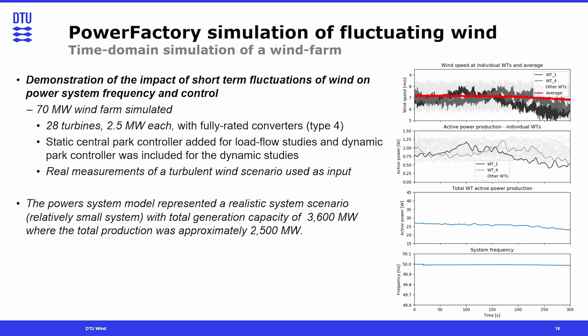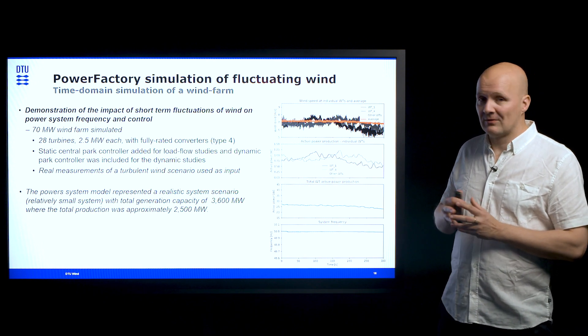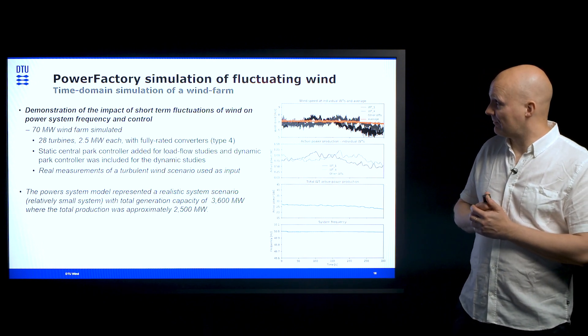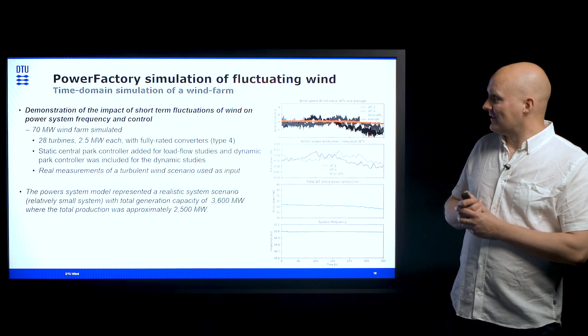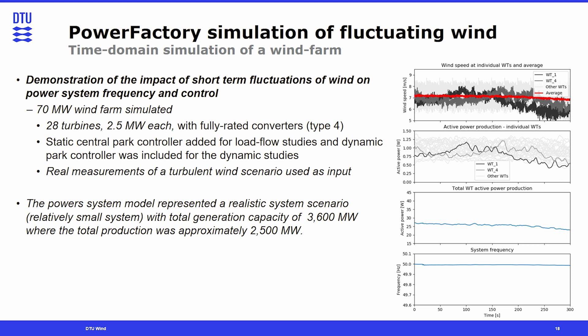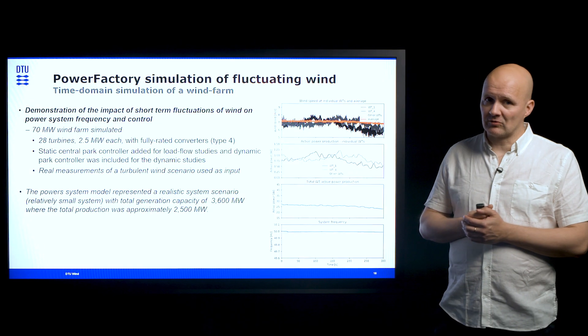We can validate these observations by looking at a Power Factory simulation carried out to demonstrate the impact of short-term wind fluctuations on power system frequency and control. A 70 megawatt wind farm was simulated, consisting of 28 wind turbines of 2.5 megawatt each. Real measurements of turbulent wind from a wind farm location were used as input. The wind farm was located in a relatively small system with a total generation capacity of 3.6 gigawatt and total production at the time of approximately 2.5 gigawatts.